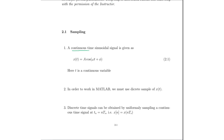A continuous time signal, which is a sinusoidal signal, is given by x(t) = A·cos(ωt + φ). Here, t is the continuous time variable, whereas φ is the corresponding phase.